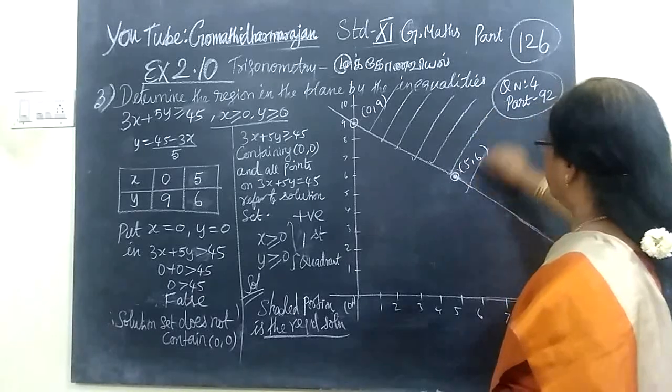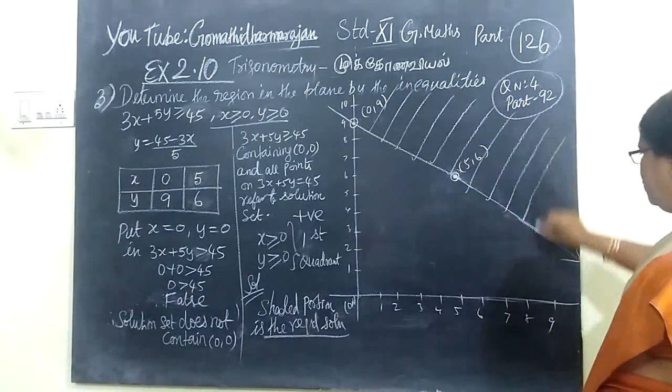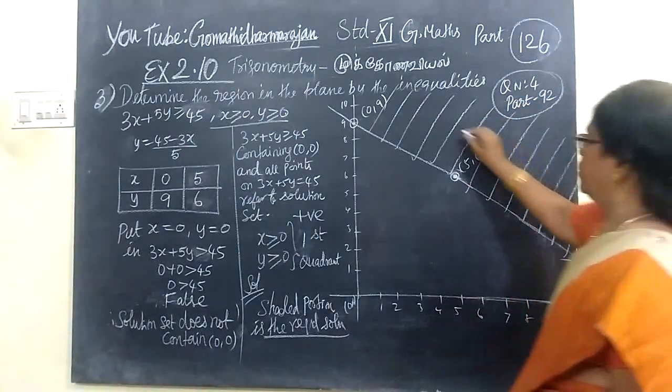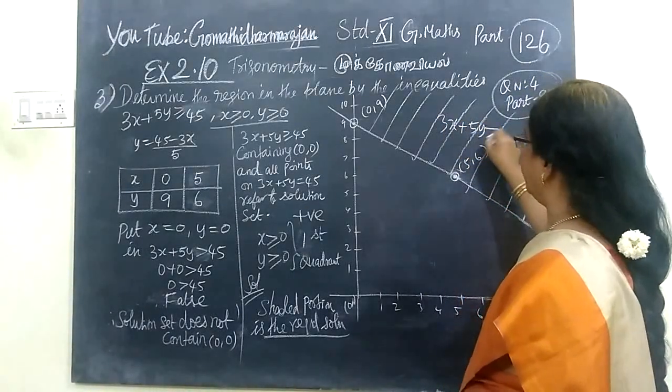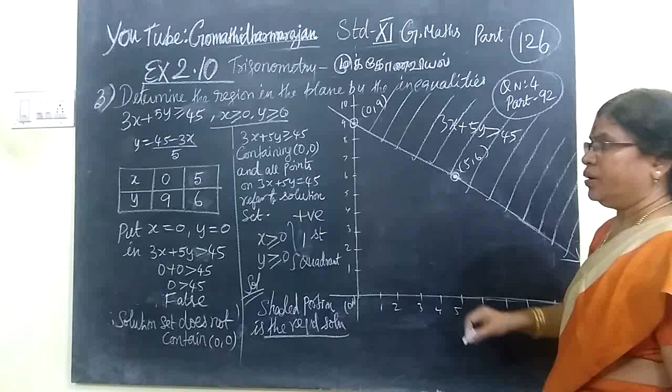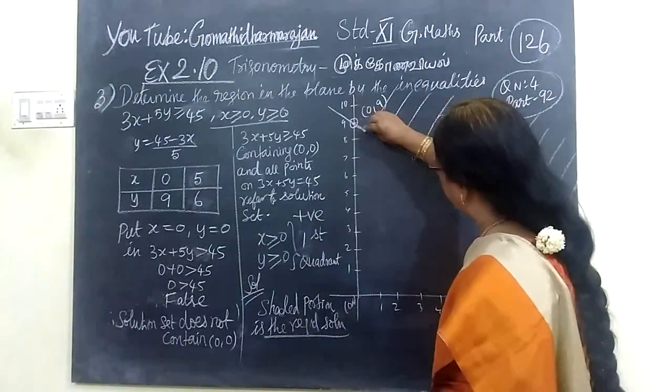So, this refers to what? 3X plus 5Y greater than 45. And every way to make these are lines.